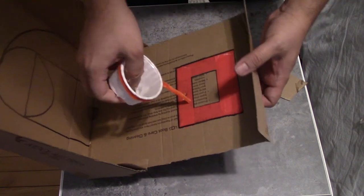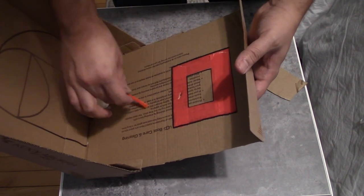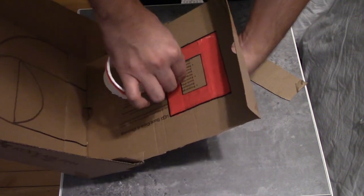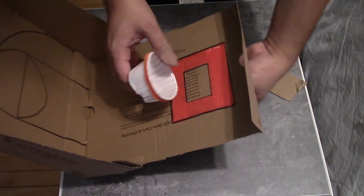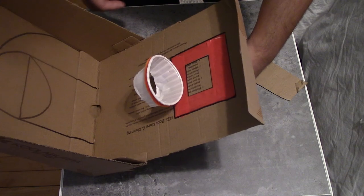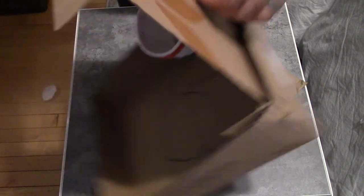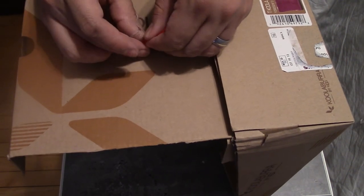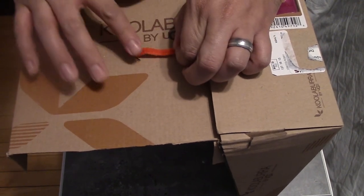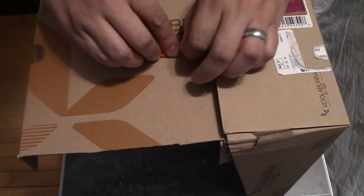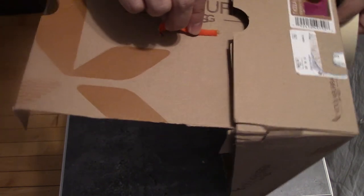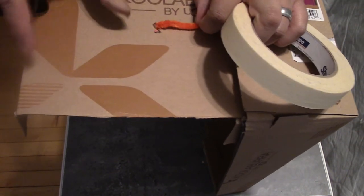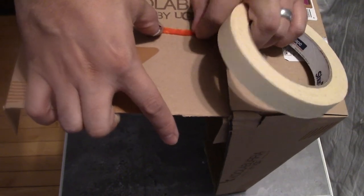And then you're going to take your pipe cleaner and push it through that hole that you just made so that the hoop will rest right there. In order to secure it, you're going to want to turn your box over and get a piece of tape. You're going to lay it across here to make sure that that hoop is secure.